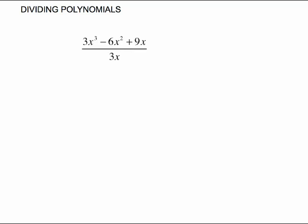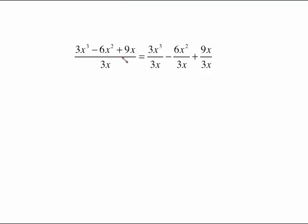If you have a polynomial divided by a monomial, the setup is very simple. All you have to do is take each of the terms of the polynomial and put them over the monomial and create separate fractions.